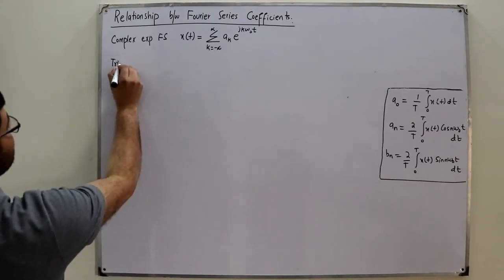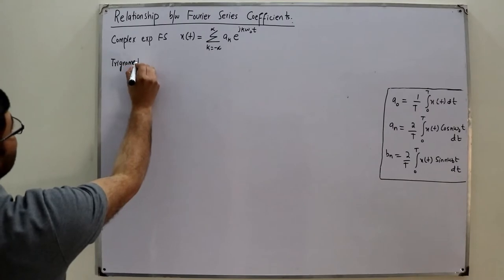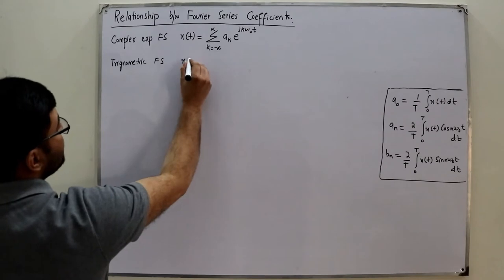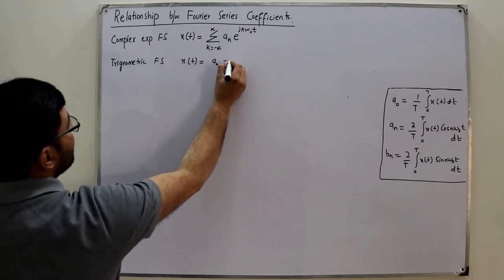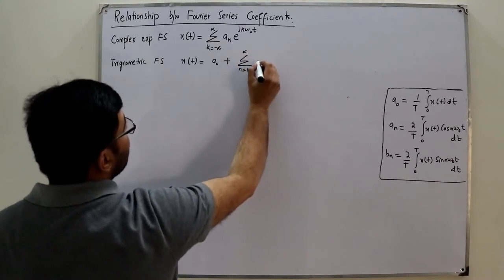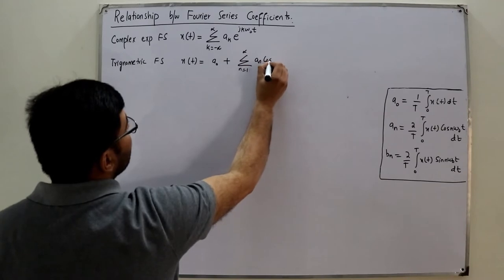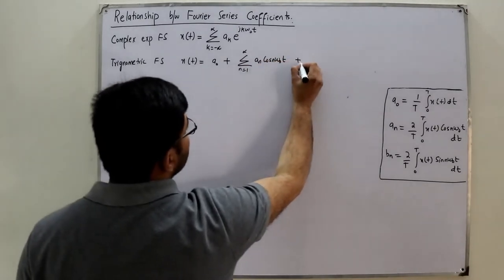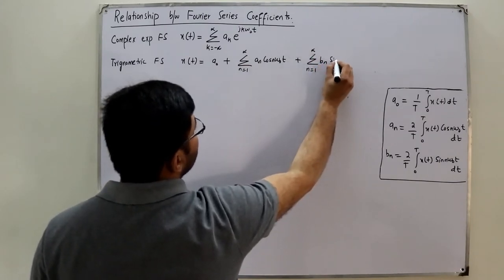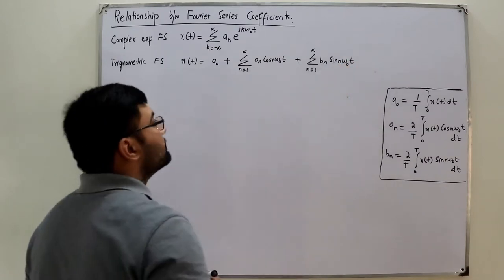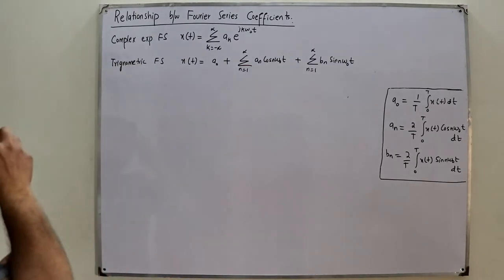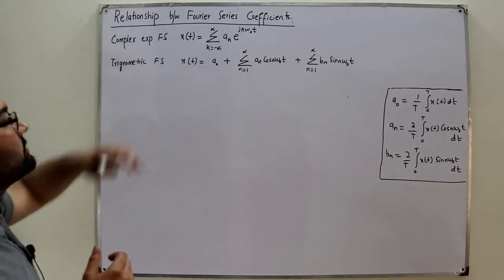Similarly, the trigonometric Fourier series was written as: x(t) = a_0 (the DC term) plus summation n running from 1 to infinity of a_n cos(n*omega_0*t), plus summation n running from 1 to infinity of b_n sin(n*omega_0*t).